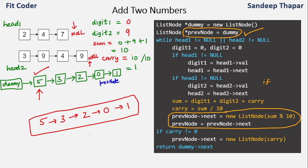The time complexity is O(n1 + n2), where n1 and n2 are the number of nodes in each linked list. Once we've understood the algorithm, let's look at the implementation.